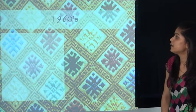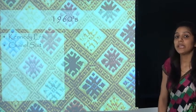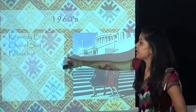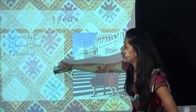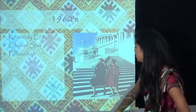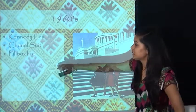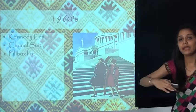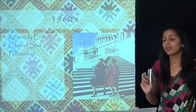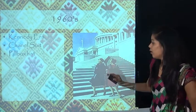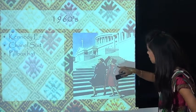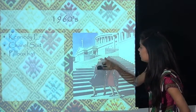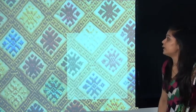Next is fashion in the 1960s, the Kennedy era. Key items included the Chanel suit and the pillbox hat. The pillbox hat is a hat that from the front looks like a crown. We can see the pillbox hat in this image.